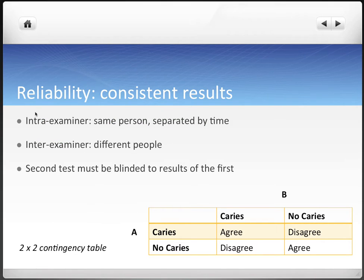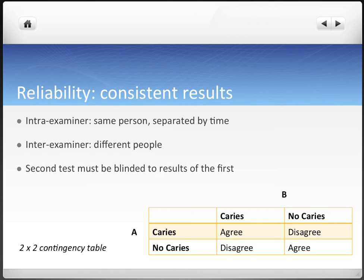Reliability is all about getting consistent results — you do the same test over and over and see if you get the same results. Intra-examiner involves one doctor who diagnoses or screens a patient, waits a little bit, then screens them again to see if they get the same results. Inter-examiner takes different doctors and sees if they get similar results with similar methods. The important thing to note is that the second test must be blinded to the results of the first, otherwise there would be a lot of bias — which is often a problem with intra-examiner reliability.